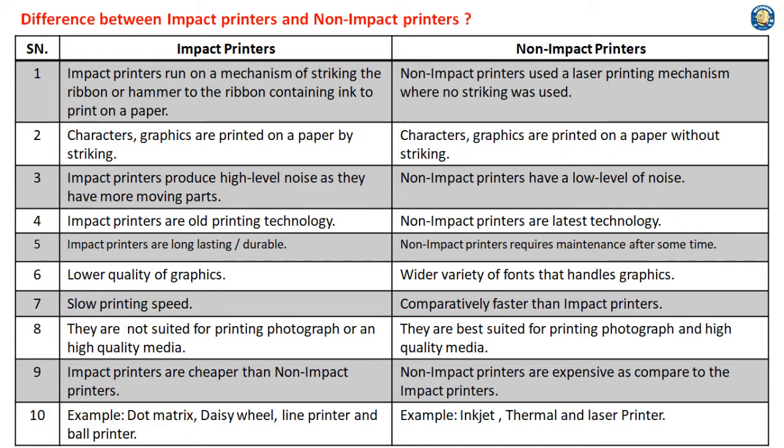Difference Between Impact Printers and Non-Impact Printers. Impact Printers run on a mechanism of striking the ribbon or hammer to the ribbon containing ink to print on a paper. Non-Impact Printers use a laser printing mechanism where no striking is used.